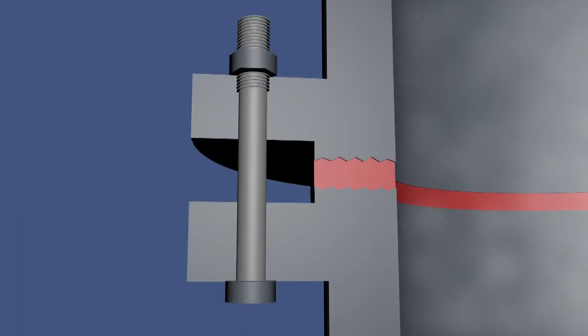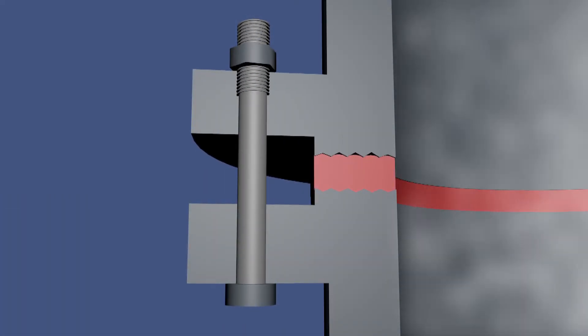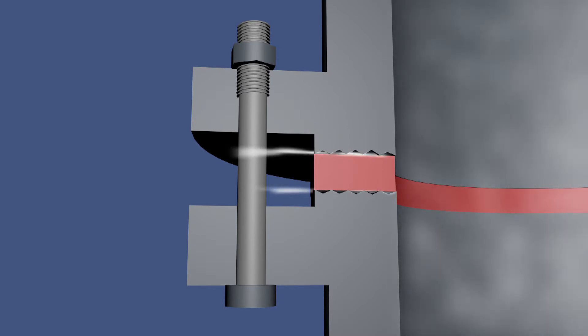However, if the stress on the gasket falls below some threshold level, the fluid contained by the flange will leak. But what provides that load on the gasket? The answer is the bolts.